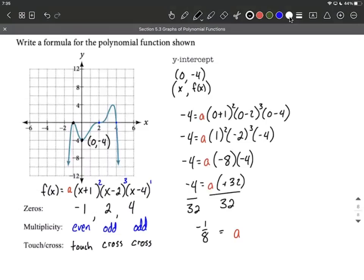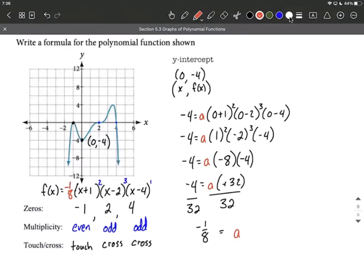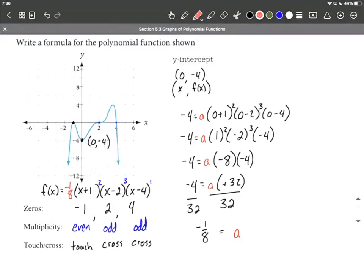From there, I'm just going to take that same value back over to the original function we were creating, replace a over here with negative one-eighth. Not going to worry about multiplying that all out or anything like that. There is our function that gives us this graph. Hope this helps out as you're working from the graph of a polynomial function to the function itself. Good luck.